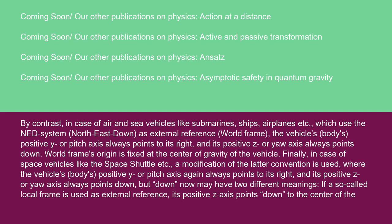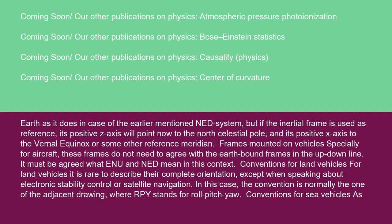In the case of space vehicles like the space shuttle, a modification of the latter convention is used where the vehicle body's positive y or pitch axis again always points to its right, and its positive z or yaw axis always points down. However, 'down' may have two different meanings. If a local frame is used as external reference, its positive z-axis points down to the center of the Earth, as in the NED system. But if the inertial frame is used as reference, its positive z-axis points to the north celestial pole, and its positive x-axis to the vernal equinox or some other reference meridian.